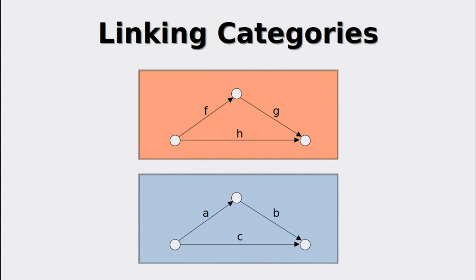For now, we are interested in morphisms — not just morphisms in a category, but also morphisms between categories. Suppose we have two categories that are isomorphic. Then we could map the morphisms between these two categories and also the objects, which are somewhat implicitly mapped if the morphisms are mapped. This linking of categories is exactly what a functor is: a simple mapping between categories.